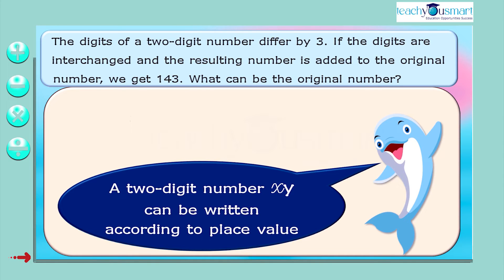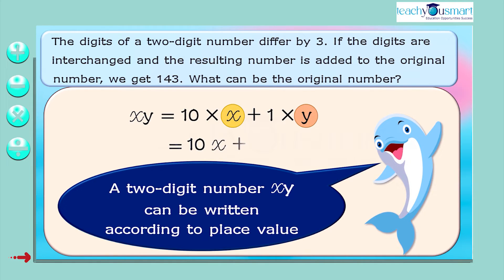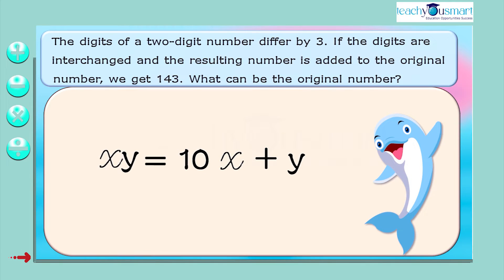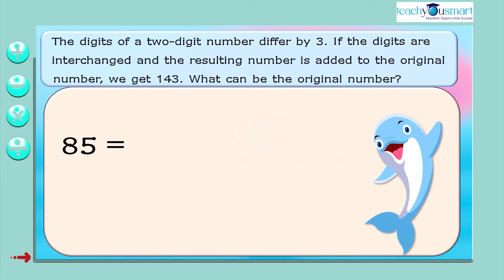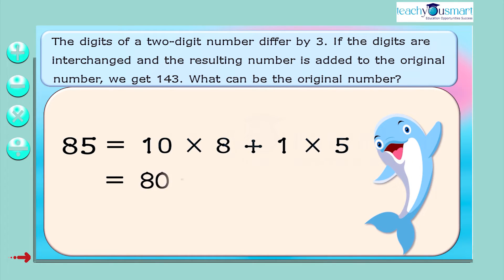We know that a two-digit number XY can be written according to place value as XY equals 10 multiplied by X plus 1 multiplied by Y, which equals 10X plus Y. For example, 85 can be written as 10 multiplied by 8 plus 1 multiplied by 5, which equals 80 plus 5.